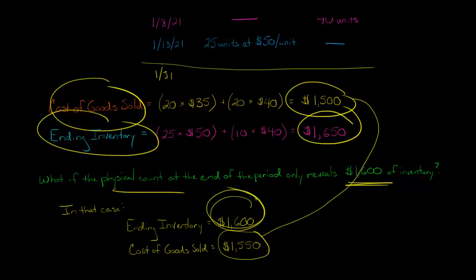So basically the idea is if we actually count the inventory and we only have $1,600 of inventory on hand, then we need to make an adjustment. Obviously we lost some extra inventory along the way, not just due to a sale, but due to losing or misplacing inventory. And so we're going to increase our cost of goods sold accordingly.